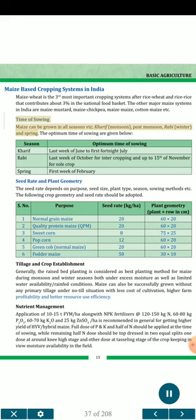Time of sowing: Maize can be grown in all seasons — Kharif (monsoon), post-monsoon, Rabi (winter), and spring. The optimum times of sowing are: Kharif — last week of June to first fortnight of July; Rabi — last week of October for intercropping and up to 15th of November for sole crop; Spring — first week of February. Seed rate and plant geometry depend on purpose, seed size, plant type, season, and sowing method.